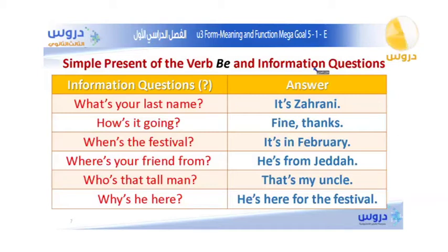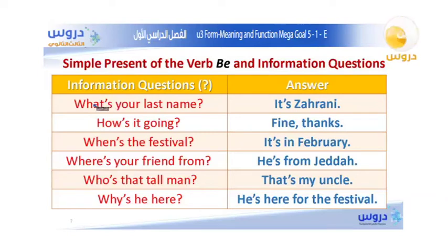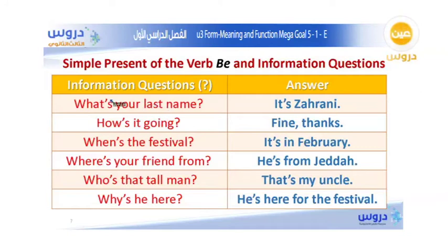Now I'm going to show you an example of how to make an information question with the verb to be in the simple present tense. The first example: What is your last name? Here 'is' is the verb to be. The question is: What is your last name? — or What's your last name? The answer is: It is Zahrani.